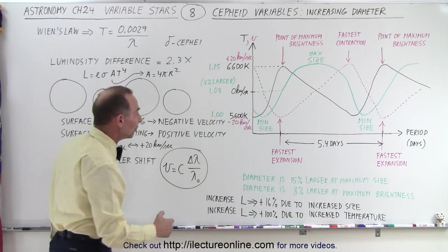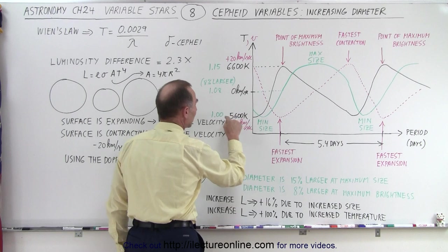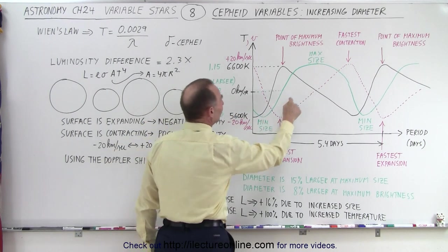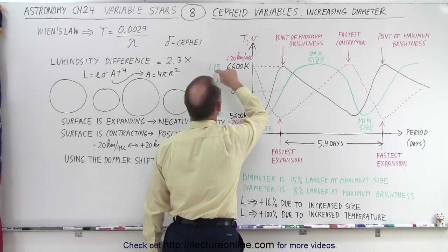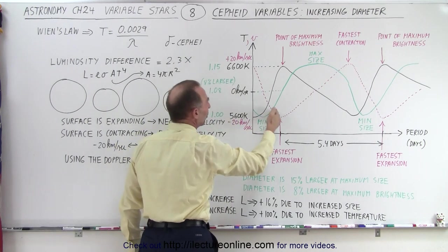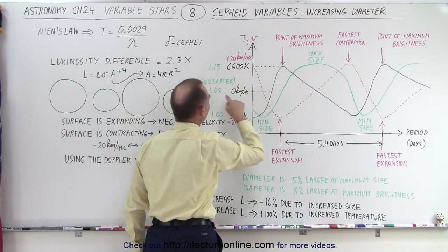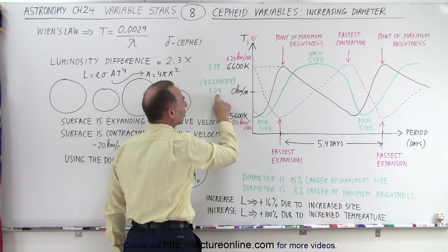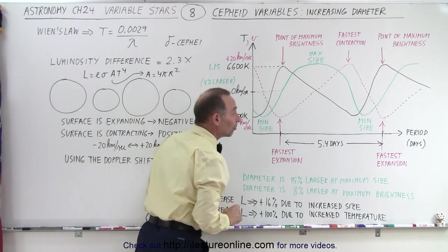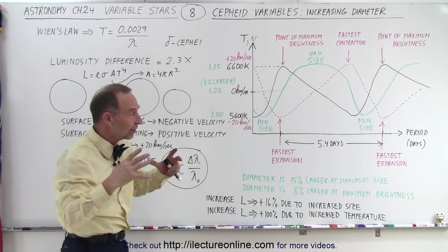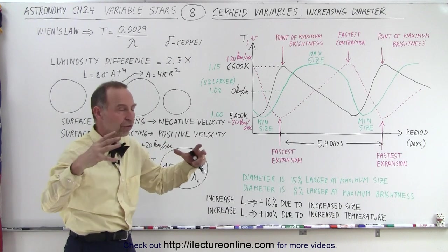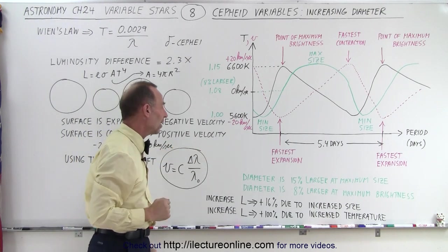But notice, if we take the size of the star to equal 1 at its minimum size, then the size of the star at its maximum size is 1.15. And at the point where we have the maximum brightness, the star is about 8% larger than it is at its minimum size. So not only is the star hotter at that point, it is also larger than it is compared to its minimum size.